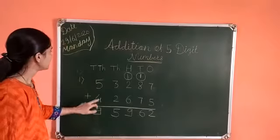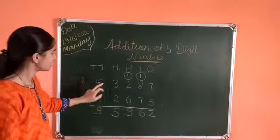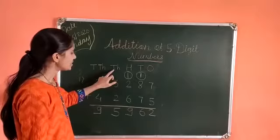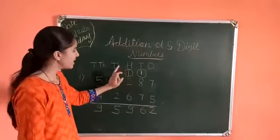So, 9 is on 10,000th place. 5 is on 1,000th place. 9 is on 100th place.